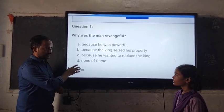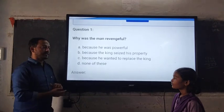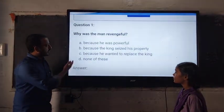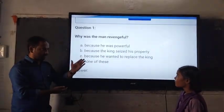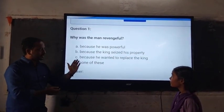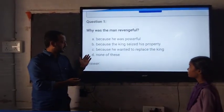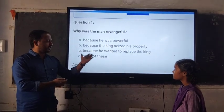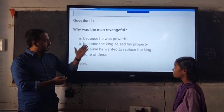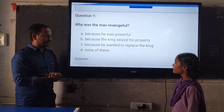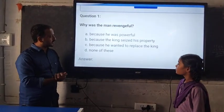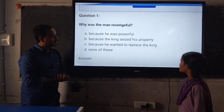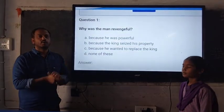I will read the question. You tell the response and the options and tell me the right answer. Why was the man revengeful? A. Because he was powerful. B. Because the king seized his property. C. Because he wanted to replace the king. D. None of the above. Now what is the right answer? Can you guess? B. Can you read the answer? B. Because the king seized his property. Is it the right answer? Yes sir. Wonderful.